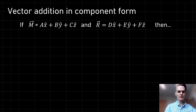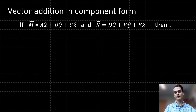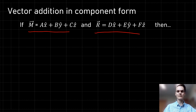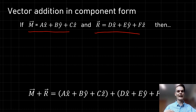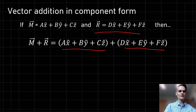The second operation we're going to learn in component form is vector addition. Addition and scalar multiplication are things we've used previously in this class. The distributive property of scalar multiplication is probably something you've seen before this class. Similarly, whenever we do vector addition in component form, it's going to look similar to algebra you've probably learned before. So let's say we have some generic vector m written in component form using the Cartesian unit vectors, and a second vector r also written in component form, and we want to add these two together. We substitute each vector for its component form.